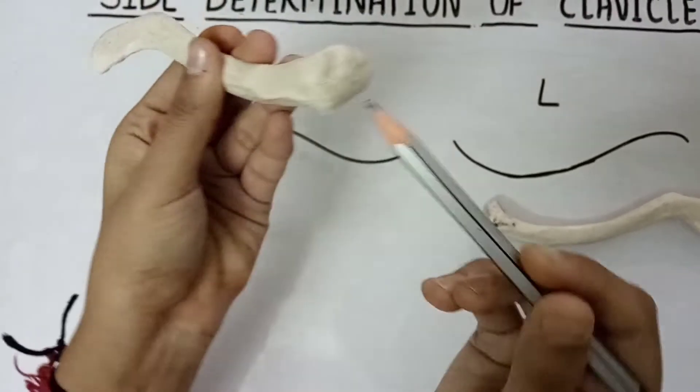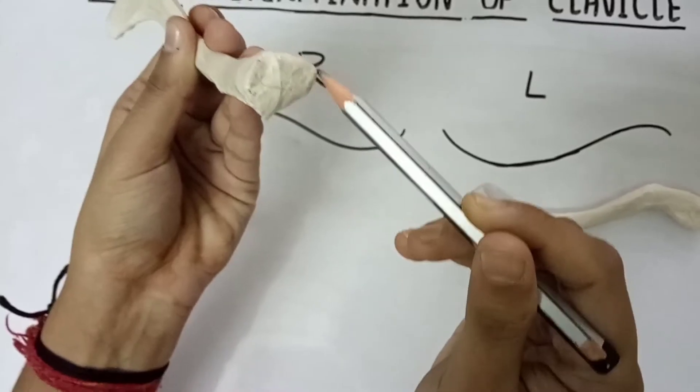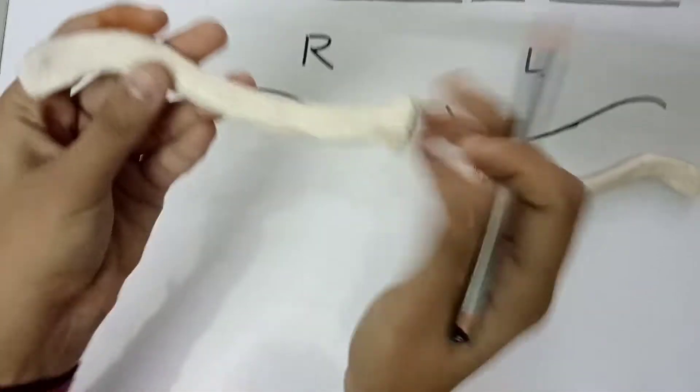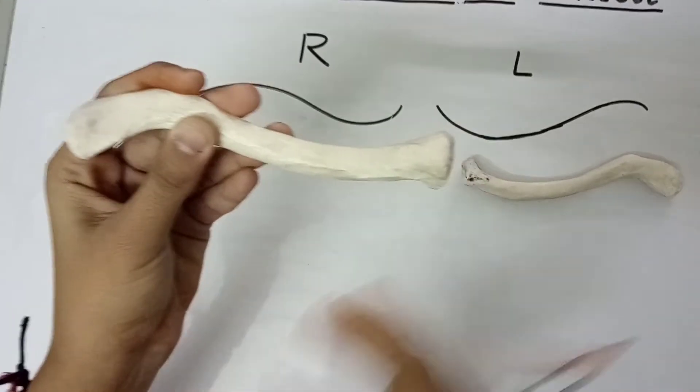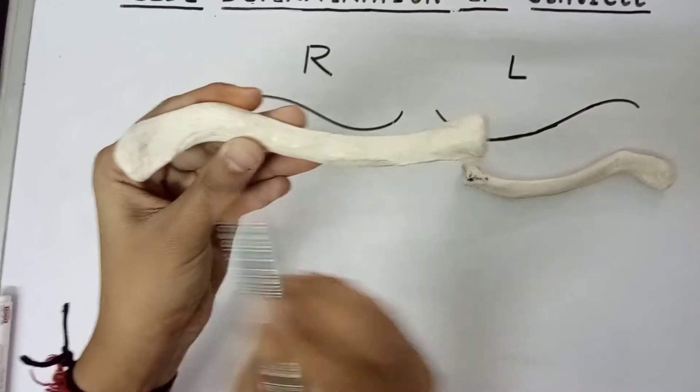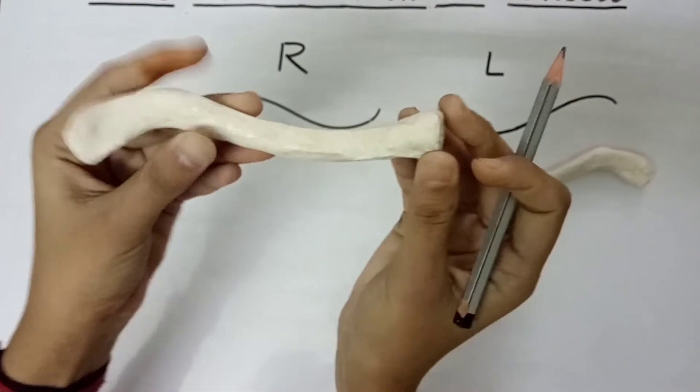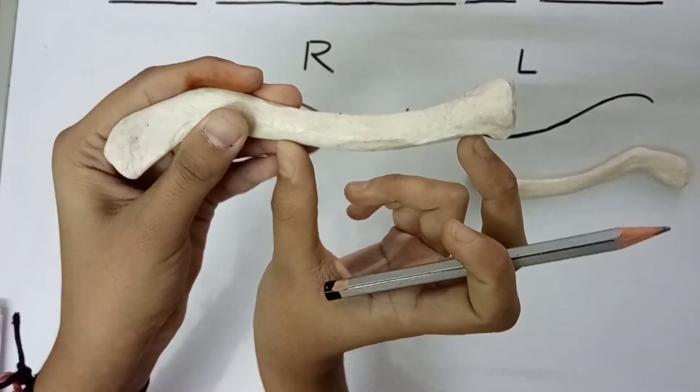The medial end is larger than the lateral end, so first thing you should know are the ends. Then these two ends are joined together by the shaft. The medial two-thirds of the shaft is convex anteriorly, as you can see.